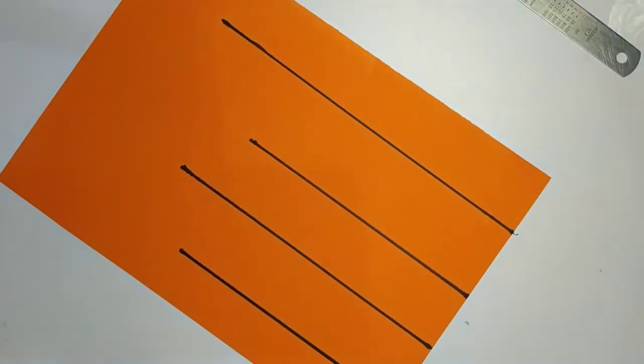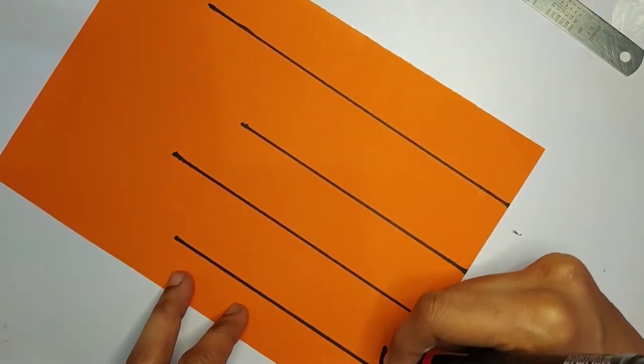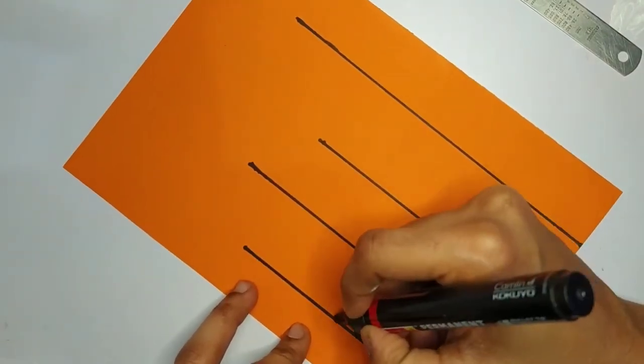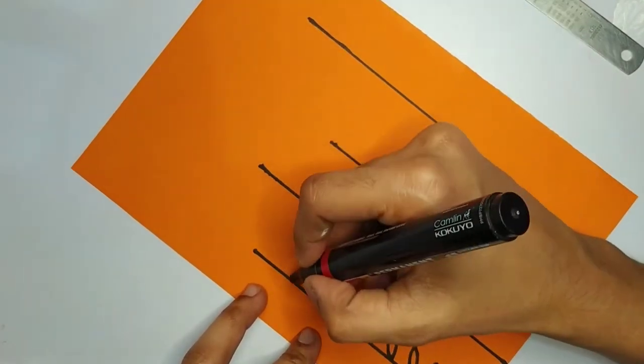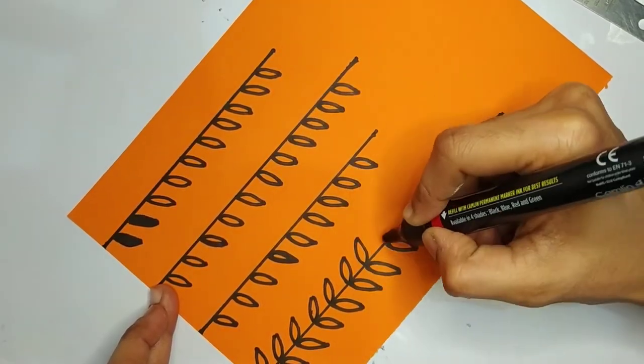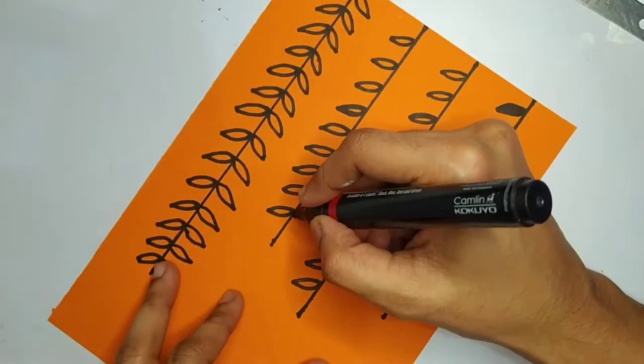I'll be drawing leaves like this. I'm just going to give outline totally and then I'll shade it inside for you guys to understand it like this. On the opposite side also, you can also use a stencil kind of thing.